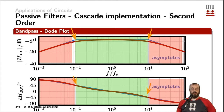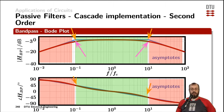Note also that when you connect a passive first-order lowpass and a passive first-order highpass, the corner frequencies are not the exact same ones as the ones you had for the individual filters, as the output impedance of one filter is interacting with the input impedance of the other one. Therefore, we need to calculate the transfer function for the whole filter and cannot derive those corner frequencies from the individual filters.